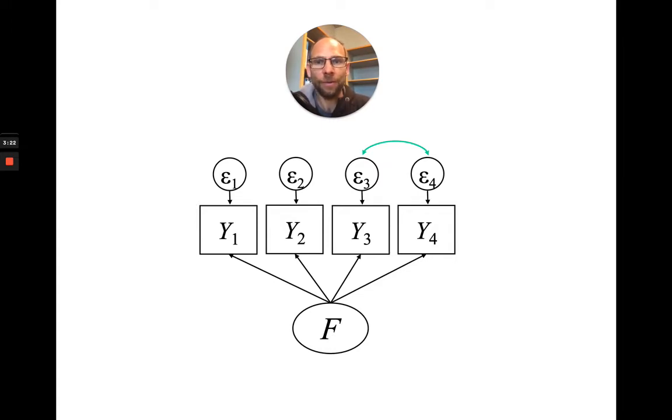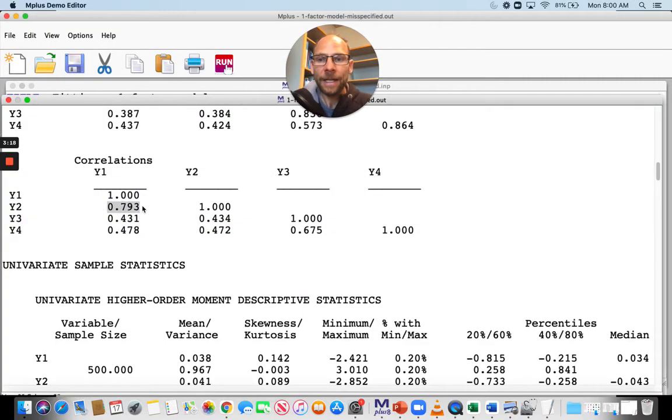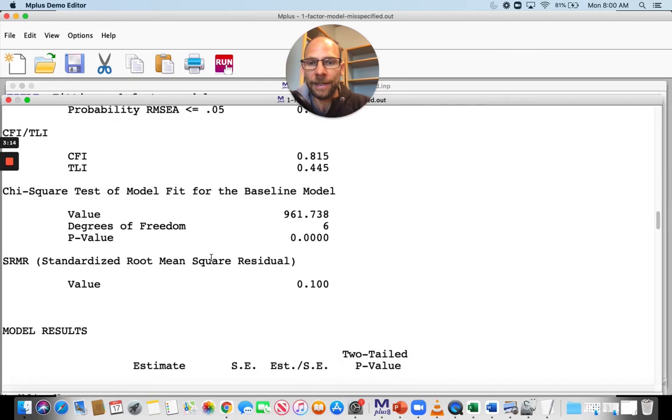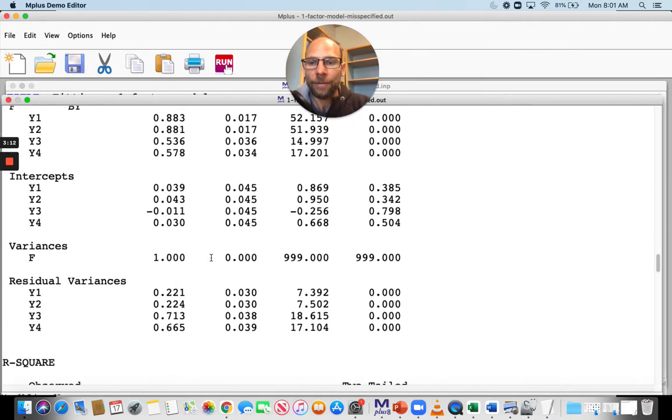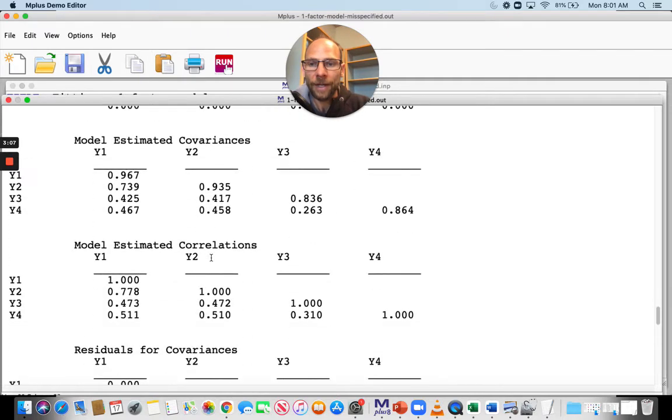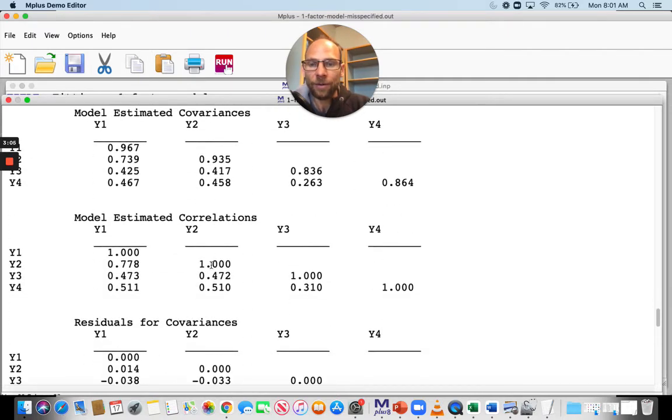If you don't have a clue about that, how can you find out? In Mplus, you can take a look at the residual statistics. The residual statistics give you the residual covariances and correlations. Here we can take a look at the model estimated correlations and you can see that the model estimated or model implied correlation between Y3 and Y4 is substantially lower than what we found in our data.